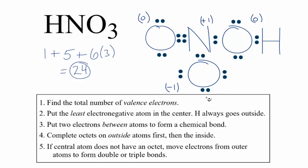The negative one is on the more electronegative element. That makes sense. This is actually the best Lewis structure for HNO3.